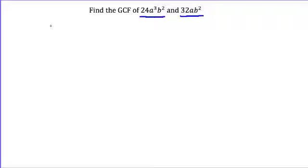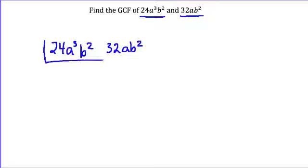So we're going to look at two different ways to do this. The first way is we will use our double division with the whole monomial: 24a cubed b squared and 32ab squared. So we'll pull out common factors. I'm going to focus on the numbers first, 24 and 32. I know 8 goes into both of those, leaving me with 3a cubed b squared and 4ab squared.